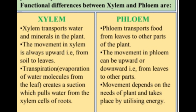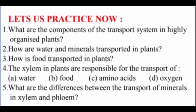The movement in xylem is always upward from soil to leaves. The movement in phloem can be upward or downward from leaves to other parts as per need. Transpiration — evaporation of water molecules from the leaf — creates a suction which pulls water from the xylem cells of roots. The movement in phloem depends on the needs of the plant and takes place by utilizing energy.